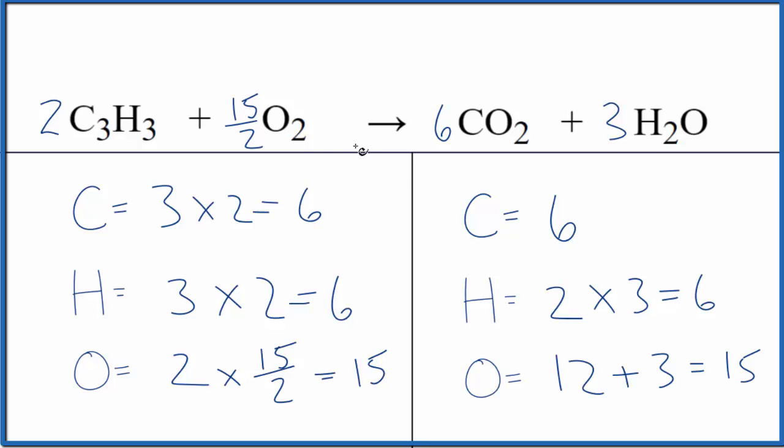Some teachers, they don't like having fractions here. But that's pretty easy to fix, because we could just multiply everything by two, and we'd still have the same ratio. So let's do that. We're going to multiply all the coefficients by two. And these are the whole number coefficients for balancing the equation C3H3 plus O2.